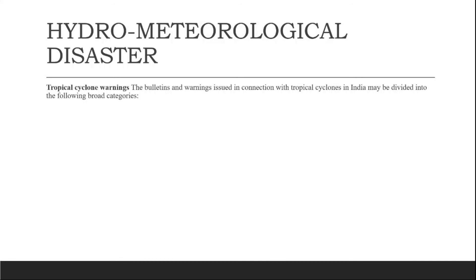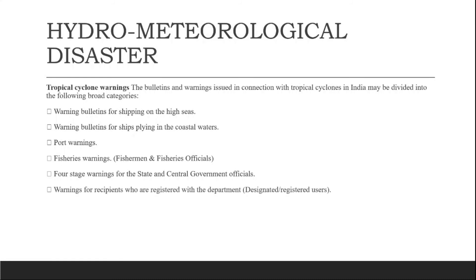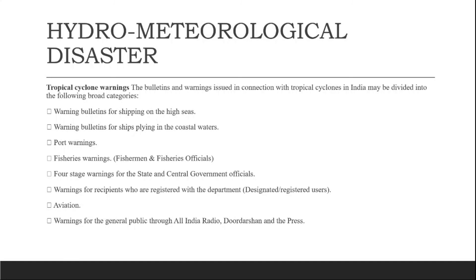Bulletins and warnings issued in connection with tropical cyclones in India are divided into broad categories: warning bulletins for shipping on the high seas; warning bulletins for ships plying in coastal waters; port warnings; fisheries warnings; four-stage warnings for state and central government officials; warnings for registered recipients; aviation warnings and warnings for the general public through All India Radio, Doordarshan, and the press; and warnings for the Indian Navy.